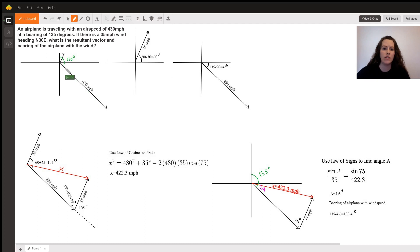Now the airplane vector I've drawn down here because the bearing, you start north and then you're going to go in a clockwise direction 135 degrees, which comes down to this vector and the magnitude of that vector is 430 miles per hour because that's how fast the airplane is going.